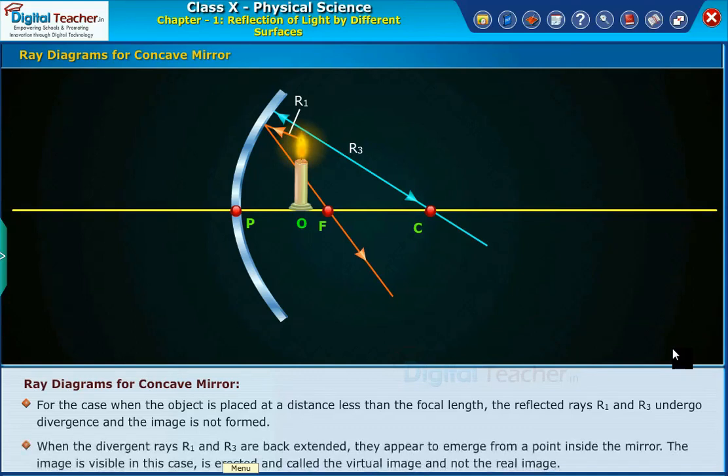When the divergent rays R1 and R3 are back extended, they appear to emerge from a point inside the mirror. The image visible in this case is erected and called the virtual image and not the real image.